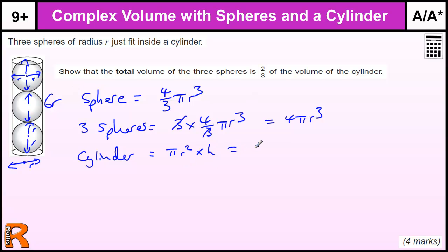So we have pi times R squared times 6R. If you wrote that down, that would be another method mark. That tidies up to be 6 pi R cubed.